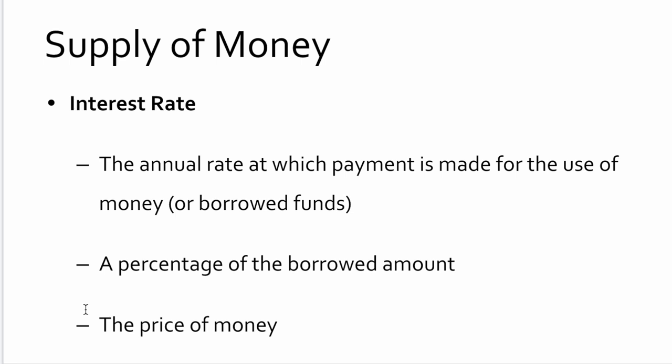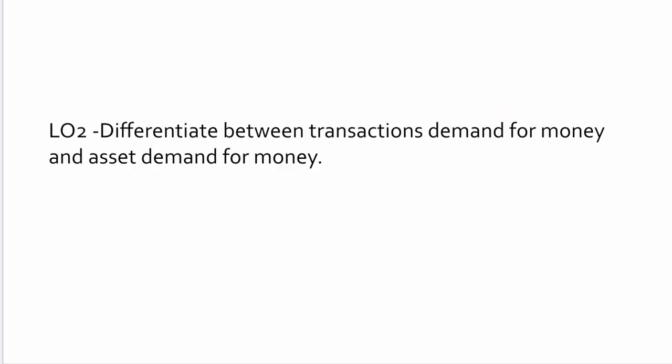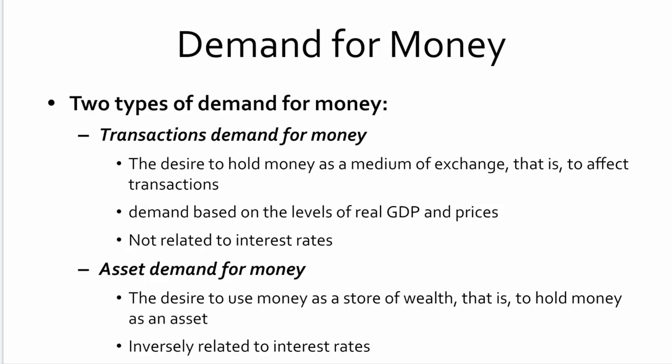For example, 4.5% would be $4.50 per hundred — the charge for that money per year. If we look at this graphically, the supply of money is really determined by the Bank of Canada. They'll print money or they'll pull money out of circulation. Next, we're going to take a look at the transactions demand for money versus the asset demand for money.